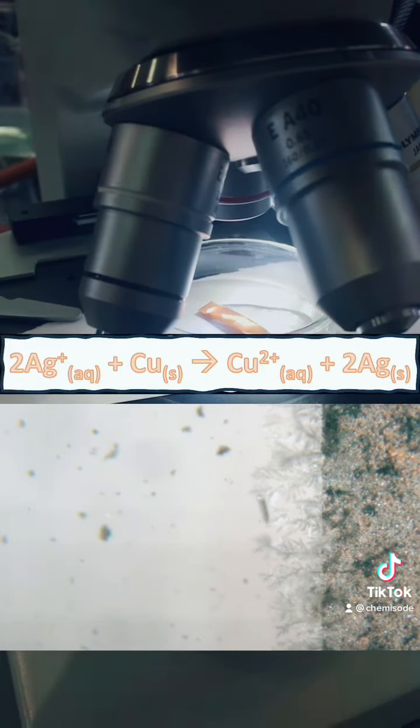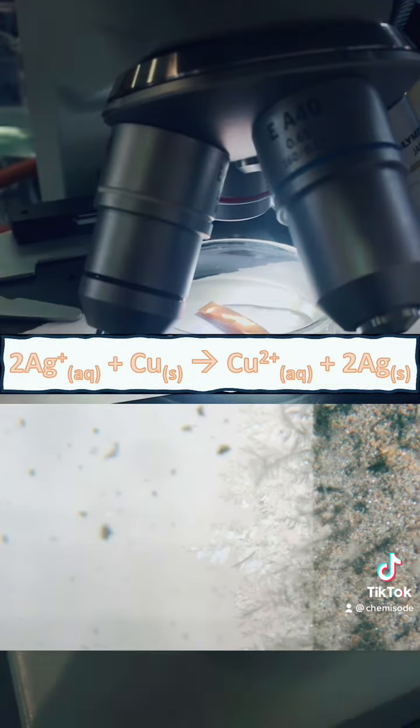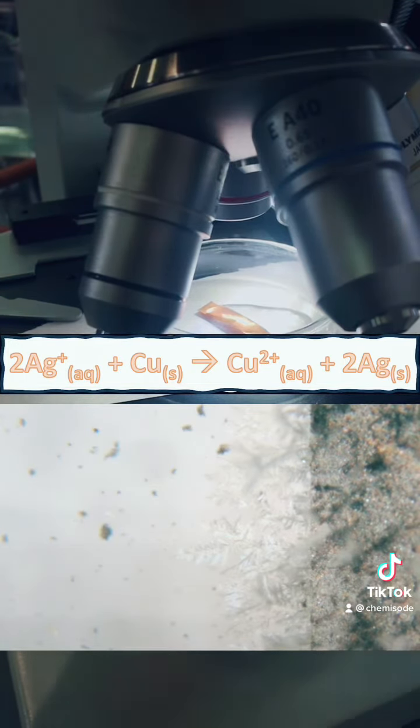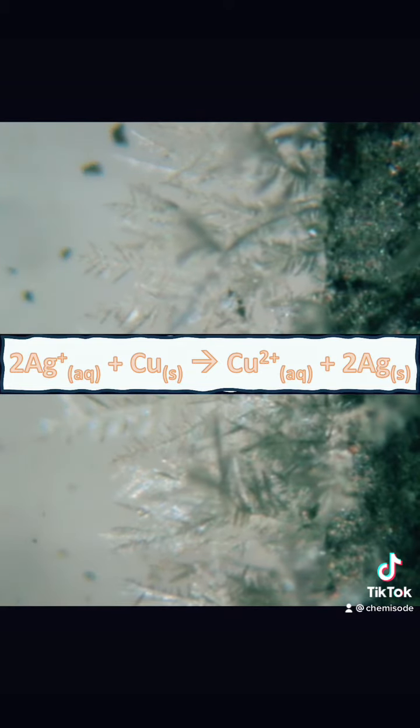So what is happening here before your very eyes? This chemical equation shows silver ions reacting with the copper metal to form copper 2+ ions and silver solid.